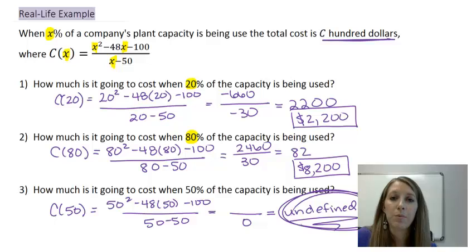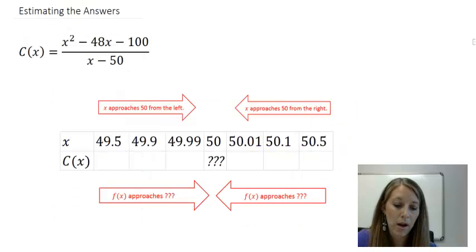Now, we have to figure out how much this plant is going to cost to actually run it at a 50 percent capacity. So, to help us figure out how to do it without actually doing limits right away, we can estimate the answers by using the table here. So, what we do is we plug in numbers close to 50 from the left, meaning as X is approaching 50 from the left-hand side. And also close to 50 from the right, meaning as X approaches 50 from the right-hand side. And then we want to figure out what that answer is going to be. So, hopefully these arrows here point to the same number, and we can fill in what this question mark is, so we can figure out how much it's going to cost us to run our plant capacity at 50 percent.